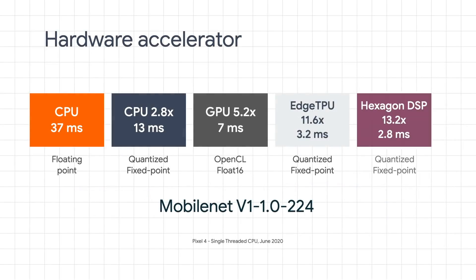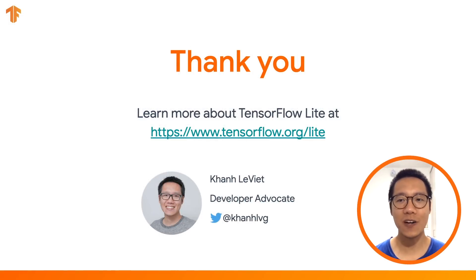Finally, when running TensorFlow Lite models on mobile devices, you can speed up inference by using hardware accelerators. GPUs are a type of hardware accelerator available on many mobile devices and are an easy win if your model is compatible. There are also other types of chips such as dedicated NPUs built specifically for machine learning inference. I hope you found this video useful as a brief introduction to on-device machine learning. In the next video, we'll talk about how to train and deploy TensorFlow Lite models on edge devices.